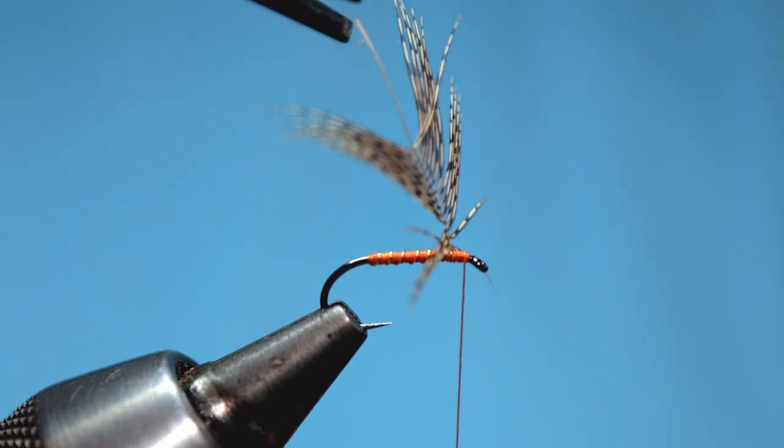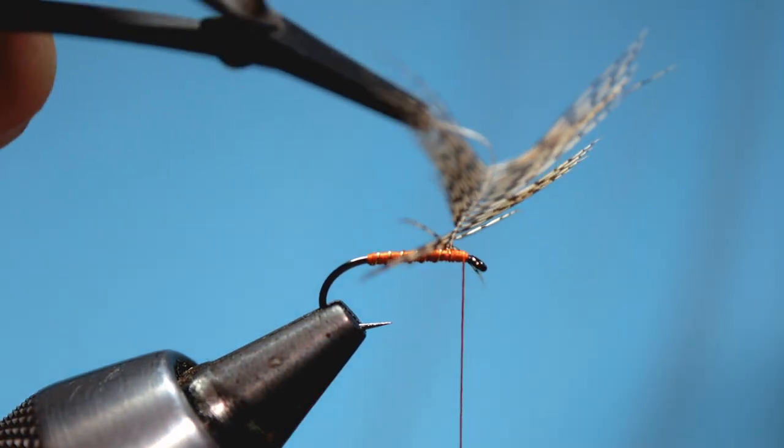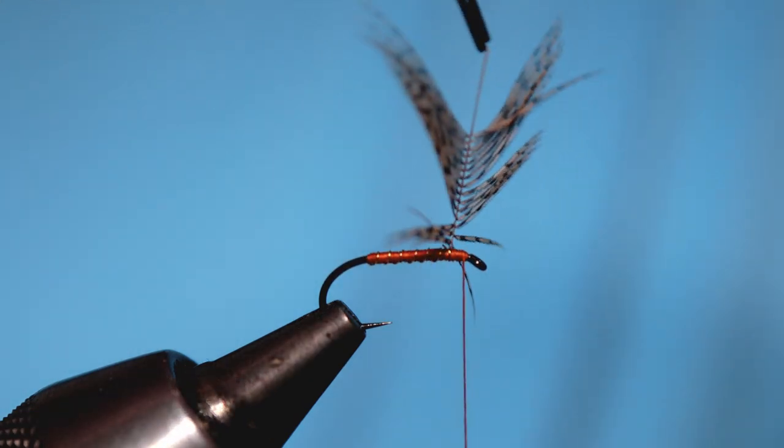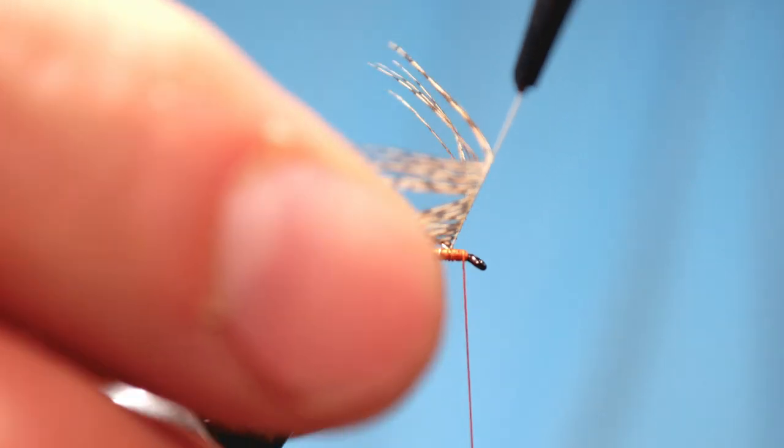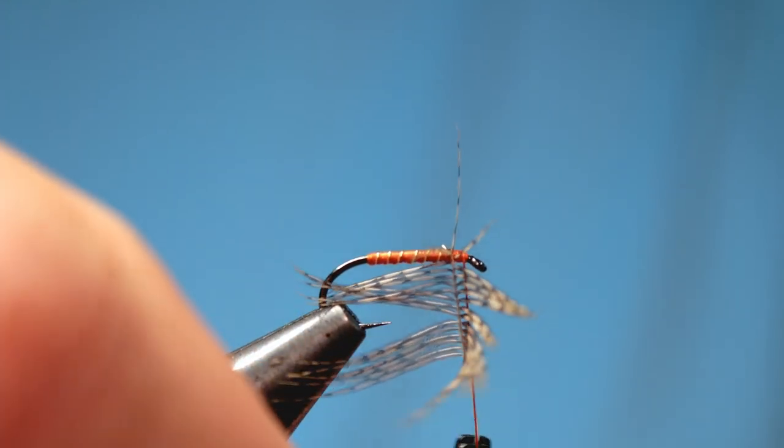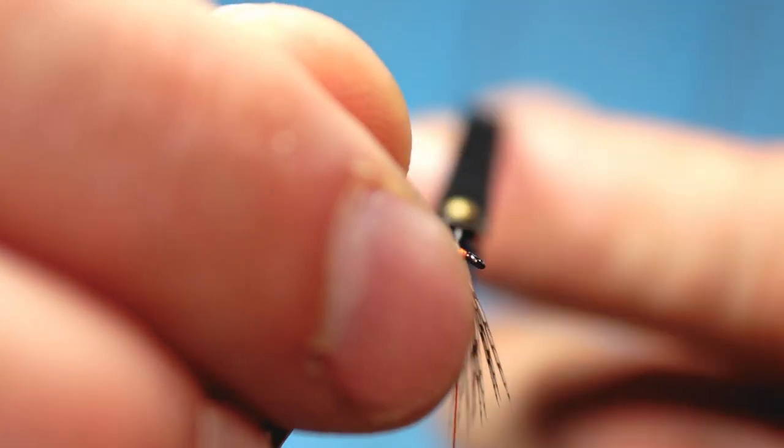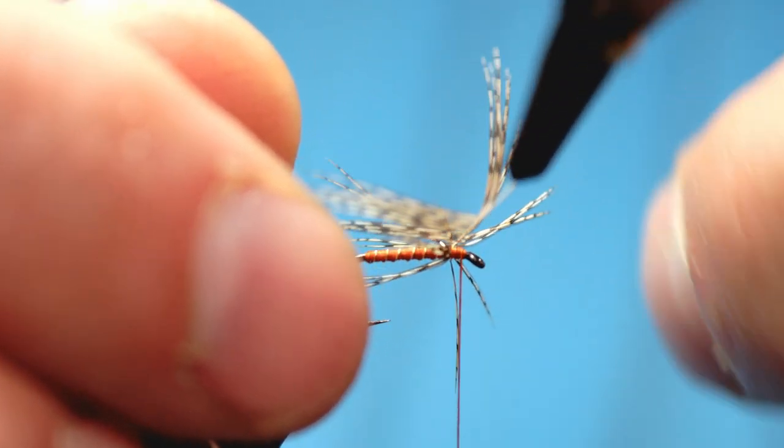Now taking our hackle in our hackle pliers we just simply brush back those hackle fibers and take two or three nice firm wraps of hackle. It's entirely up to you how many wraps of hackle you want. I like generally two and a half to three to give the fly a bit more of a fuller look.